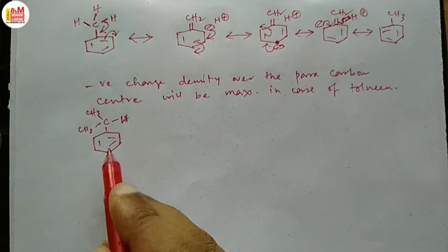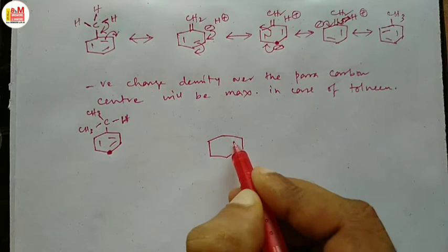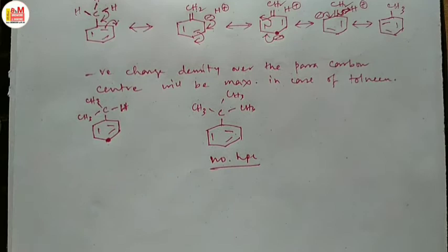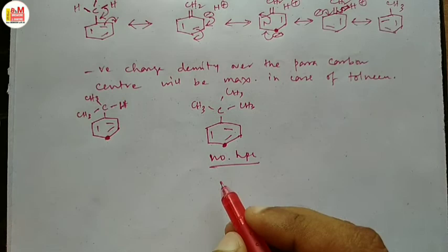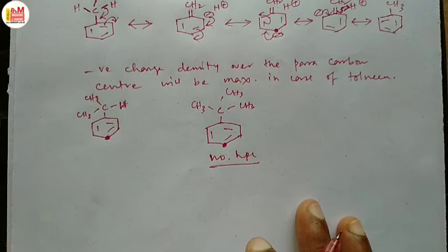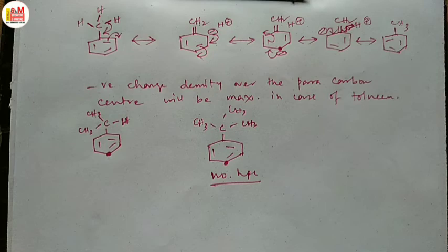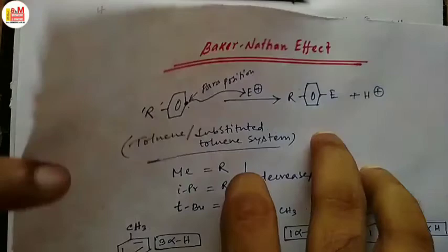In the case of tertiary butylbenzene, where no alpha hydrogen is present, there is no hyperconjugation. That is why the electron density over the para carbon center is least, and the rate of reaction is also lowest. This is what the Baker-Nathan effect describes. This famous experiment conducted by Baker and Nathan paved the way for the invention of a new type of conjugation named hyperconjugation. The variation in electron density over the para carbon center in toluene or substituted toluene systems is known as the Baker-Nathan effect.